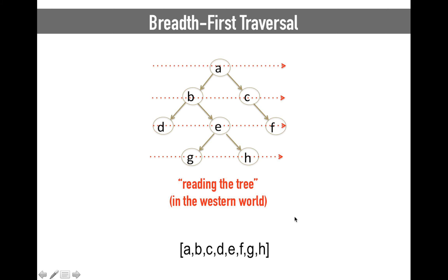So if we are going to read the tree as in the western world, the result of traversing the tree in that way will be A, B, C, D, E, F, G, H in this example. So this will be the result.